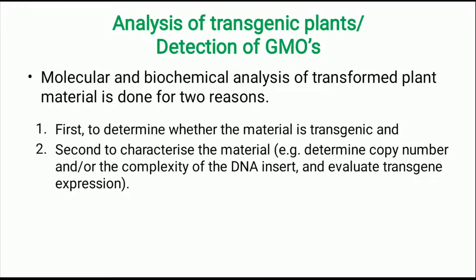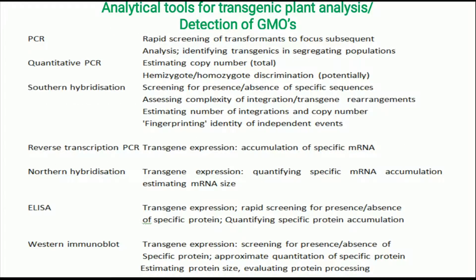Next we will see the detection of genetically modified organisms, or analysis methods for identification of transgenic plants. Molecular and biochemical analysis of transformed plant material is done for two reasons: first, to determine whether the material is really transgenic; and second, to characterize the material. Several methods are widely used. The simplest is PCR, using transgene-specific primers to detect the presence or absence of a DNA fragment. Quantitative PCR can estimate copy number. Southern blot hybridization also reveals copy numbers and presence of the transgene. Reverse transcription PCR helps understand gene expression, and Northern blot hybridization checks transcription ability — that is, gene expression at the transcriptional level. ELISA and Western blot detect gene expression at the protein level.